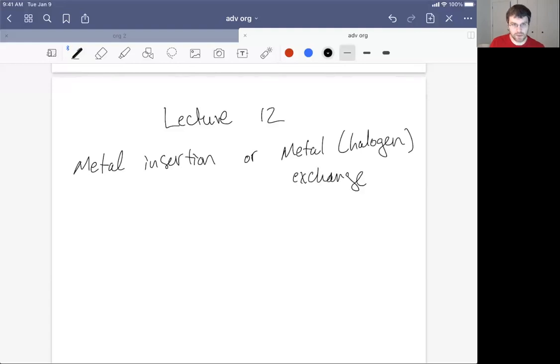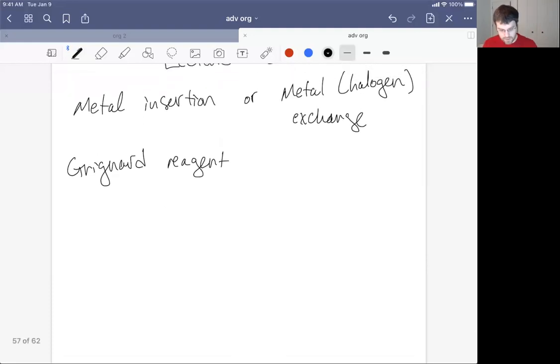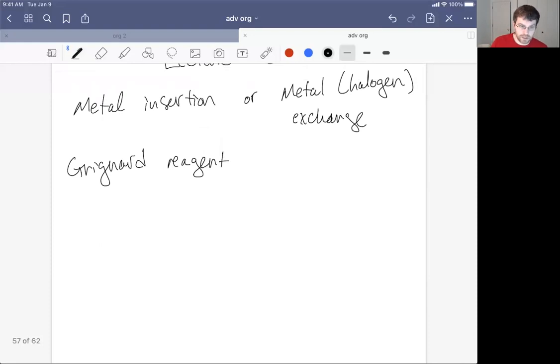We've seen a little bit of this when we're looking at n-butyl lithium reactions, but the most classic example is formation of the Grignard reagent. The Grignard reagent is very simple. The beauty of the reaction is its simplicity.